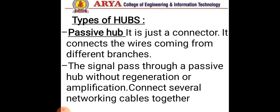There are two types of hubs. The first is a passive hub and the second is an active hub. A passive hub is just a connector — it connects the wires coming from different branches in a star topology Ethernet LAN. It is simply a point where signals coming from different stations collide, making the hub the collision point. The signal passes through a passive hub without regeneration or amplification, connecting several network cables together.